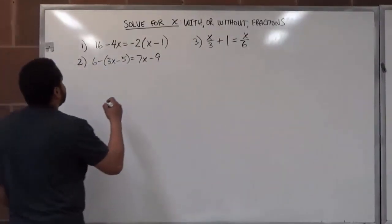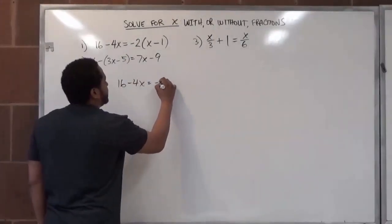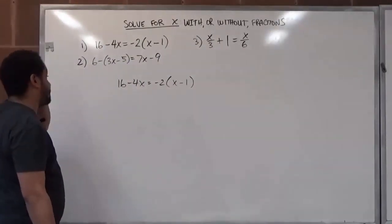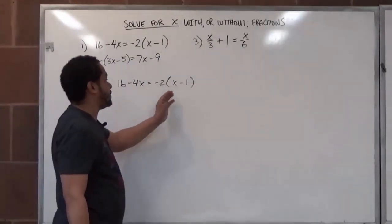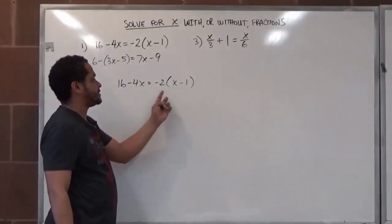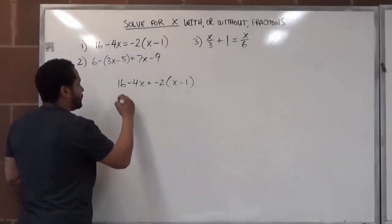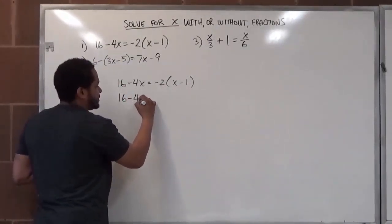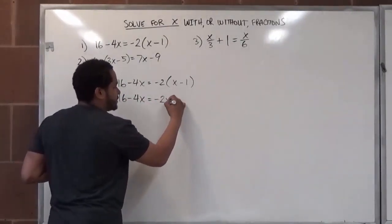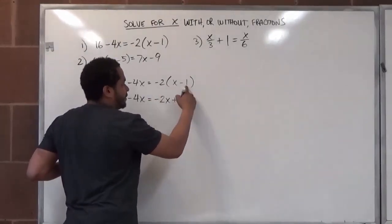Here we have 16 take away four x's equals negative two multiplying by x minus one as a binomial. The first step, using the order of operations, is multiplication since there's nothing to do in the parentheses. So we're going to distribute the negative two to each term. The left side stays the same. On the right side we get negative two times x which is negative two x's. Negative times a negative is a positive, and two times one is just two.